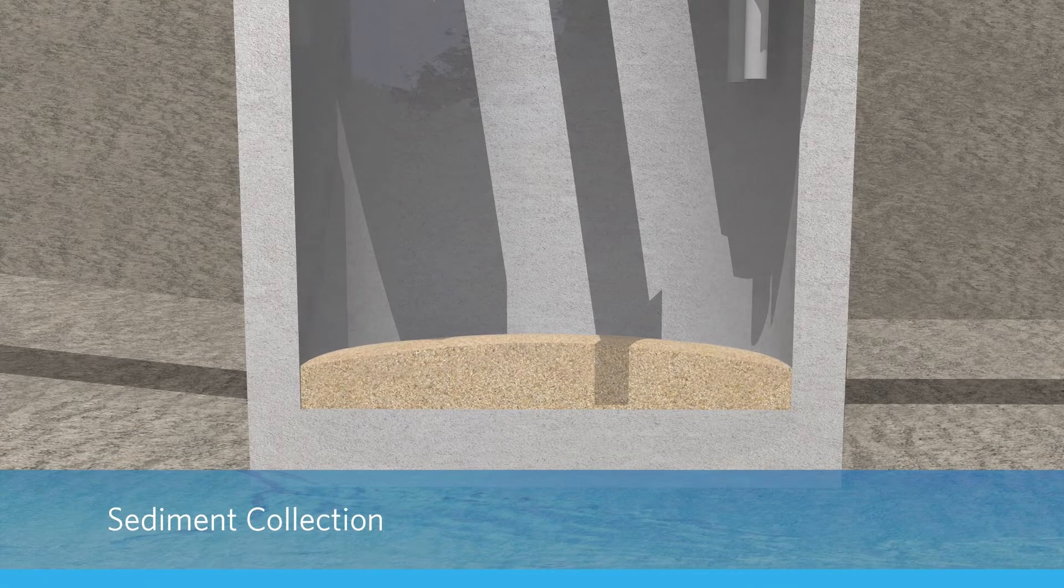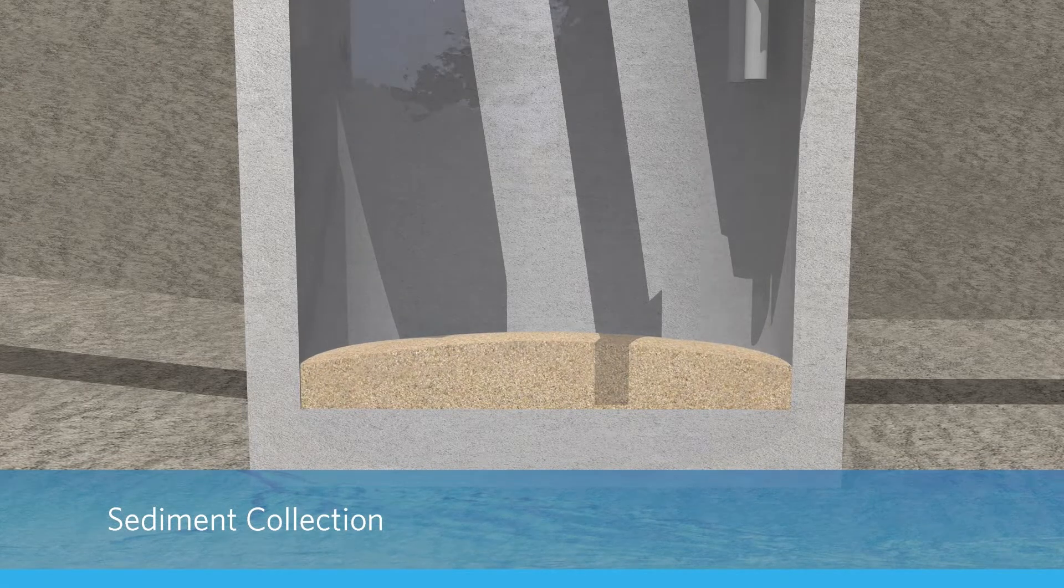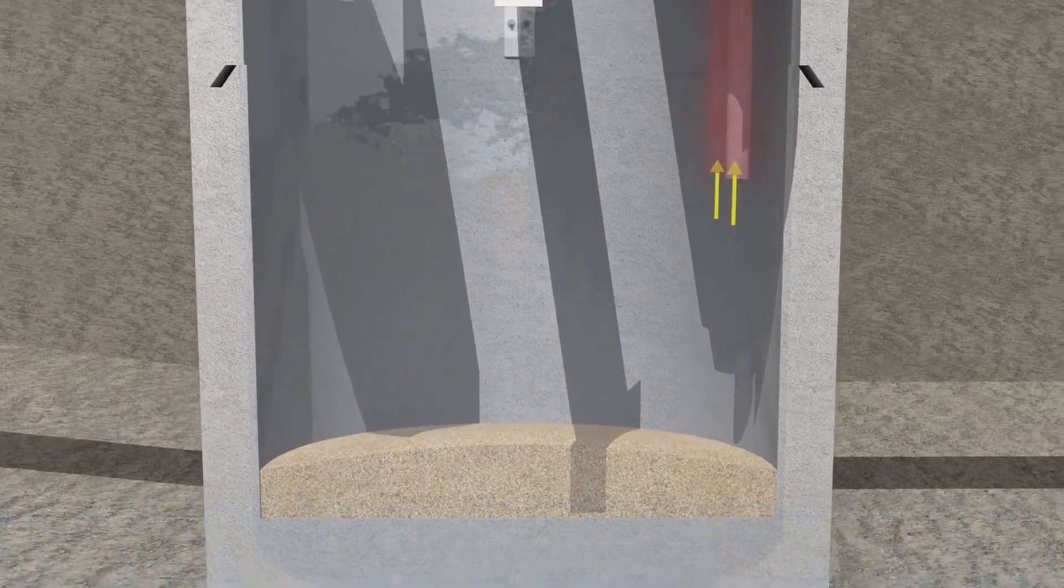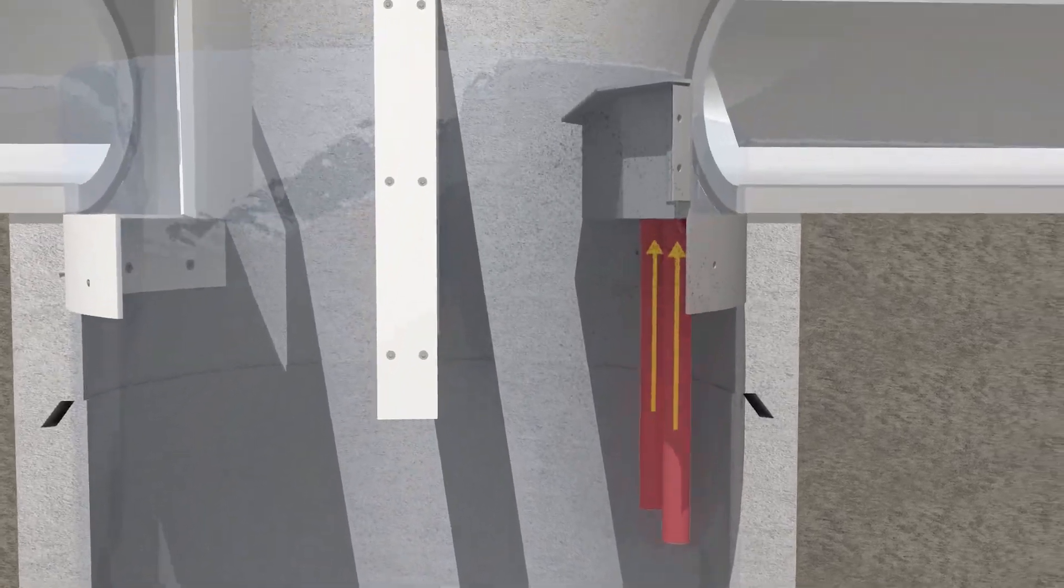As sediment settles and water passes under the oil floatable skimmer, flows either travel upward to the crest of the outlet's weir diverter flange or through the low-flow downpipes.